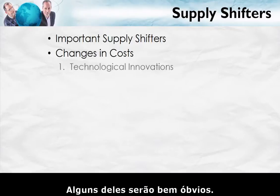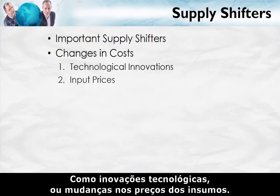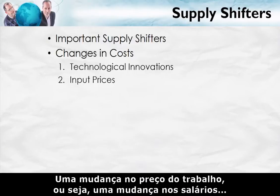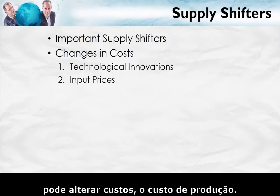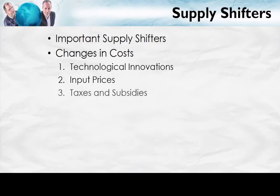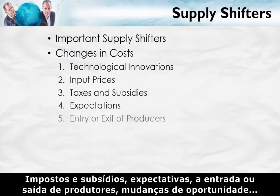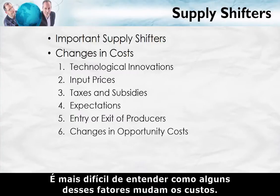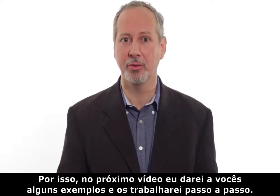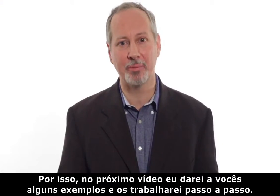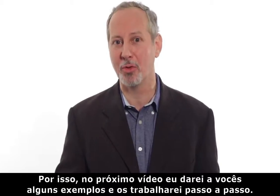Some of these factors are pretty obvious — for example, technological innovations or changes in input prices. A change in the price of the input of labor, that is a change in wages, can change the costs of production. Other factors include taxes and subsidies, expectations, the entry or exit of producers, and changes in opportunity costs. Some of these are a little harder to understand in terms of how they change costs, so in the next video I'm going to go through each of them and give you some examples.